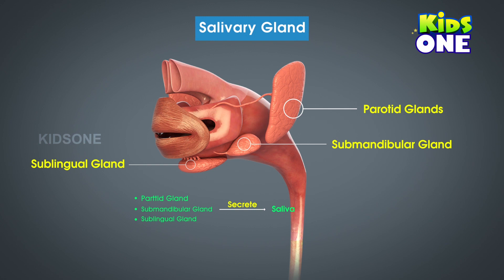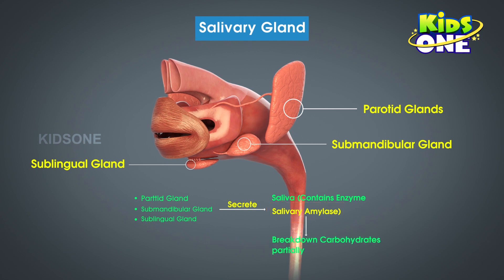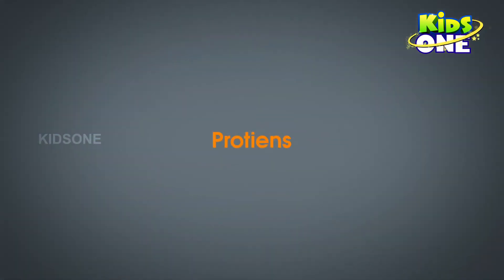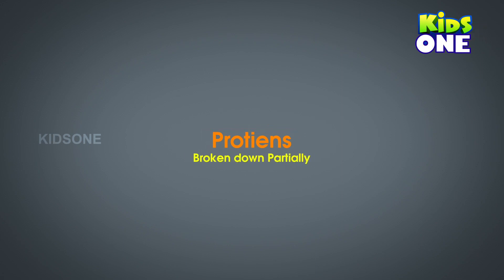The saliva secreted by these pairs of glands contains the enzyme salivary amylase, which helps in the partial breakdown of carbohydrates in the food. The next macronutrient is proteins. The proteins too are partially broken down to begin with, just as the carbohydrates are.